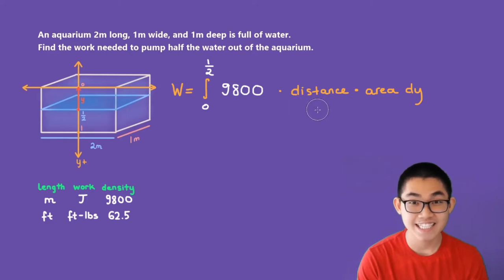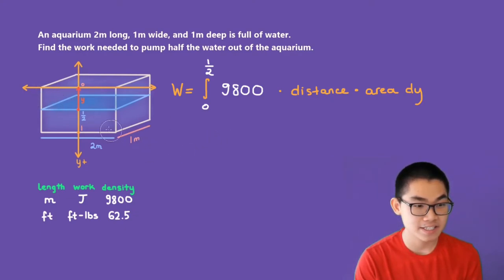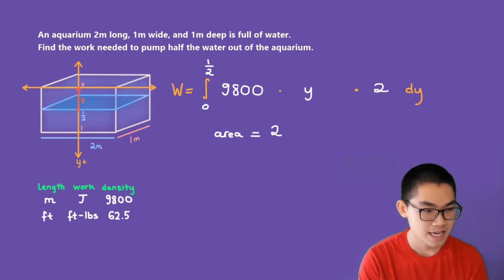The distance is the distance that we need to pull each layer to the top. As mentioned before, that distance is simply y. And then how about the area? What's the area of the layer of water? You might learn before that the area of a rectangle is equal to the base times the height. We already know that the base is 2 meters and the height is 1. So 2 times 1 gives you 2. The area is simply 2 meters squared.